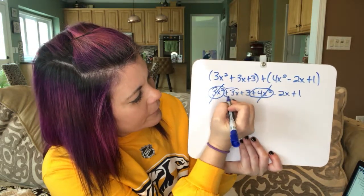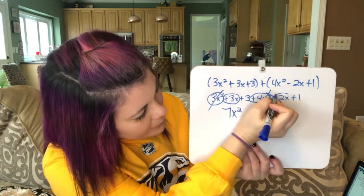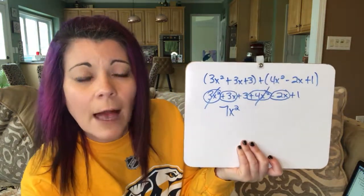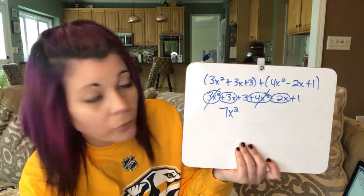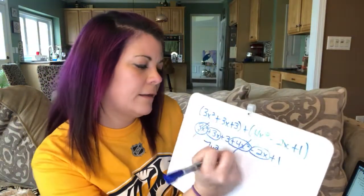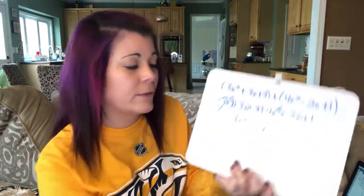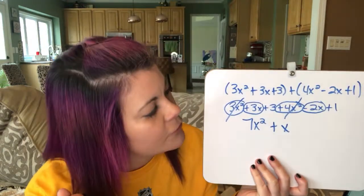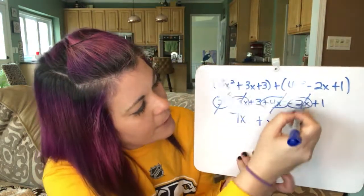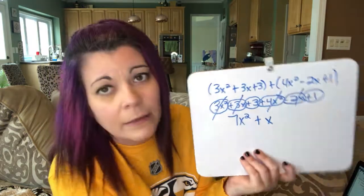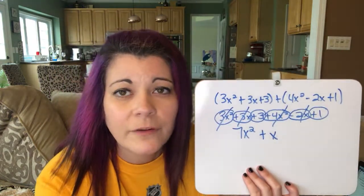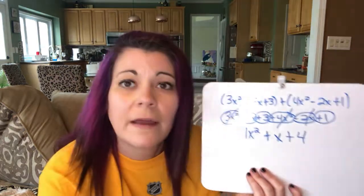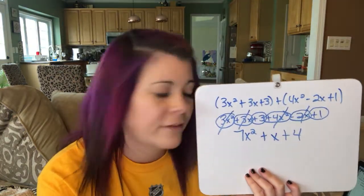Now we have 3x and minus 2x — so positive 3 minus 2 is positive 1. We write plus x because we do not need to write the 1; it's always understood if there's no coefficient. Mark those out. Then we have plus 3 plus 1, so positive 3 plus 1 is a positive 4. And there you have it: 7x squared plus x plus 4.